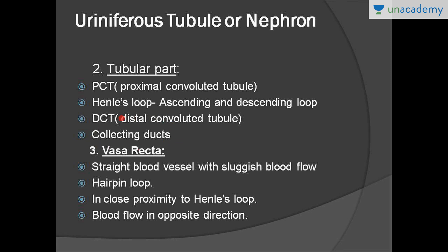Then there are the collecting ducts. The vasa recta — 'vasa' meaning vessel and 'recta' meaning straight — is basically a vessel in the shape of a hairpin loop that helps in concentration of urine. It has sluggish blood flow and is in close proximity with the loop of Henle, as it helps in the counter-current mechanism, which we'll discuss further in the lesson.